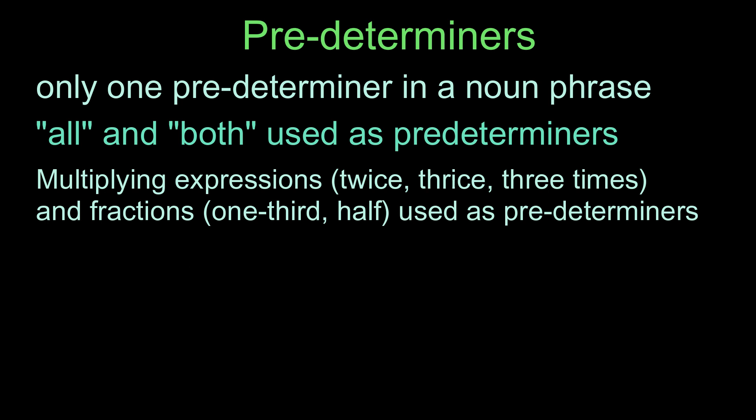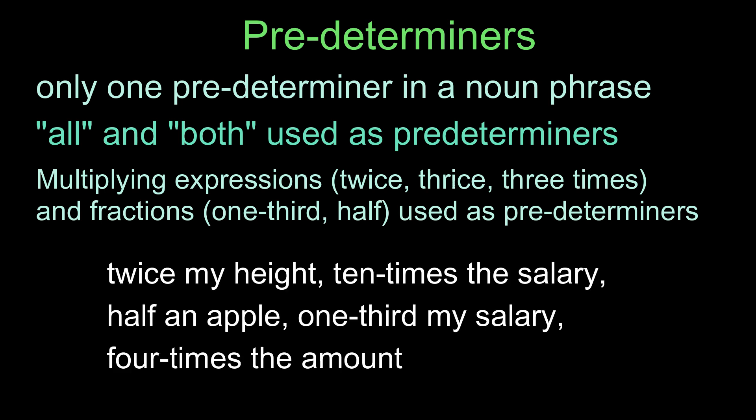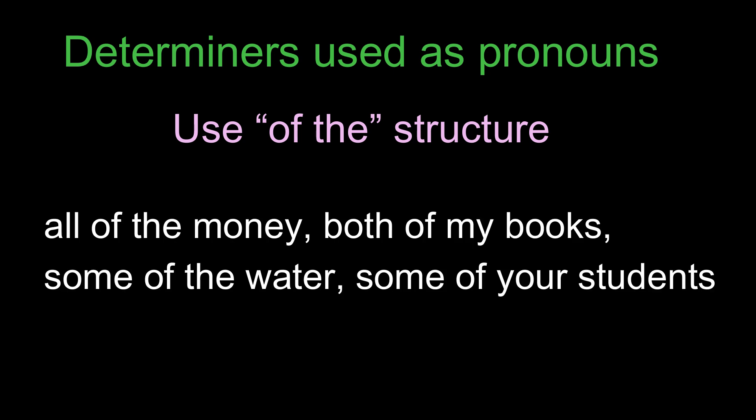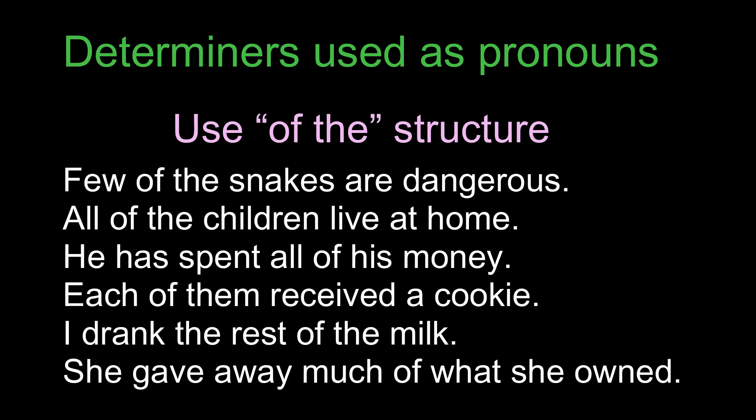These are examples: 'Twice my height,' 'Ten times the salary,' 'Half an apple,' 'One-third my salary,' 'Four times the amount.' Most indefinite quantifiers can be used as pronouns as well as determiners. When used as pronouns, the 'of' structure is used. For example: 'All of the money,' 'Both of my books,' 'Some of the water,' 'Some of your students,' 'Few of the snakes are dangerous,' 'All of the children live at home,' 'He has spent all of his money,' 'Each of them received a cookie,' 'I drank the rest of the milk,' 'She gave away much of what she owned.'